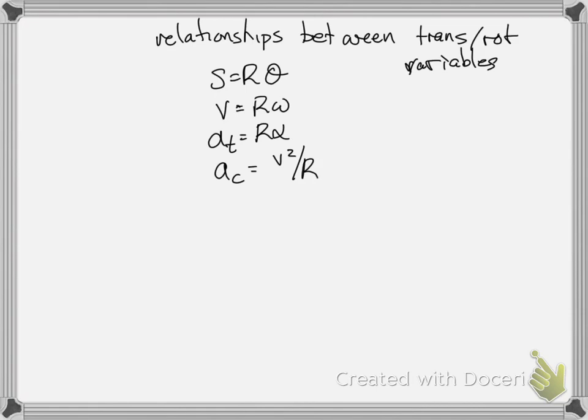So now we've got these relationships between our translational and rotational variables. We wrote down our translational variables, we wrote down our rotational variables, and we wrote down the equations that relate the translational to the rotational variables. The relationship s equals r theta, v equals r omega, and the tangential acceleration equals r alpha — those are all the translational variables on the left, and theta, omega, and alpha are the rotational variables.